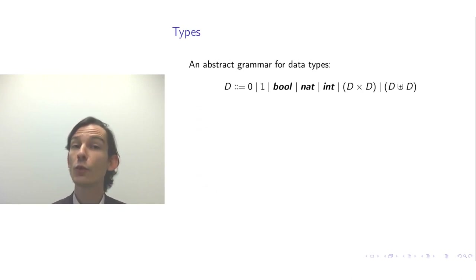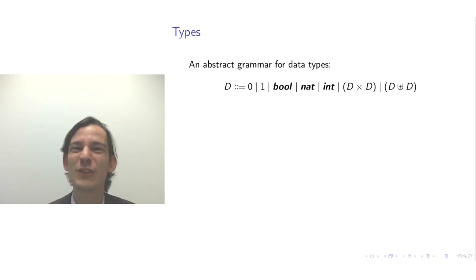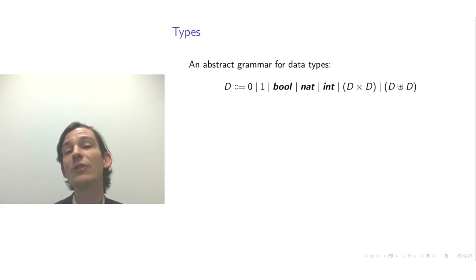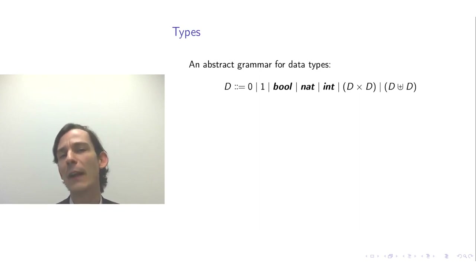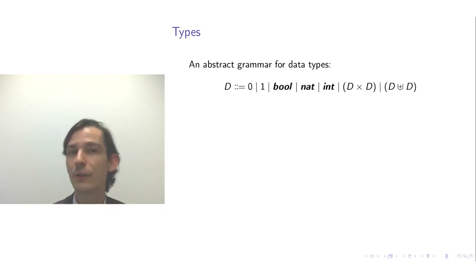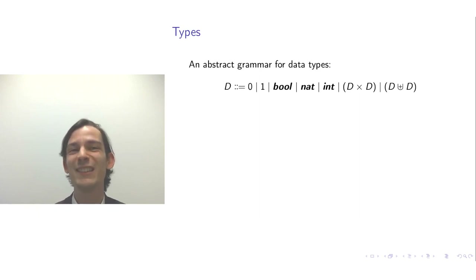In the context of programming languages, programs are recognizable by computers — you could understand programs as strings of characters. So if you want to annotate variables with types, it makes sense to introduce a grammar for types as well. Let's start with an abstract grammar for data types, leaving aside function types for now.